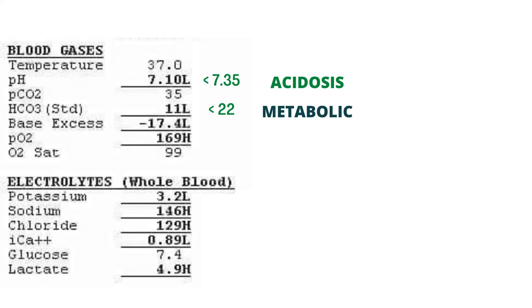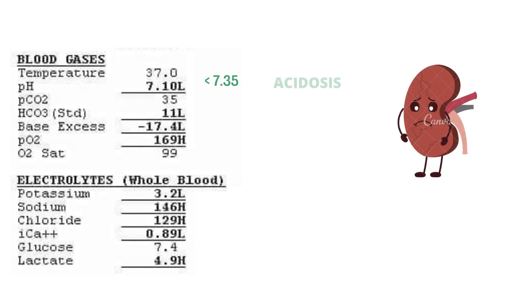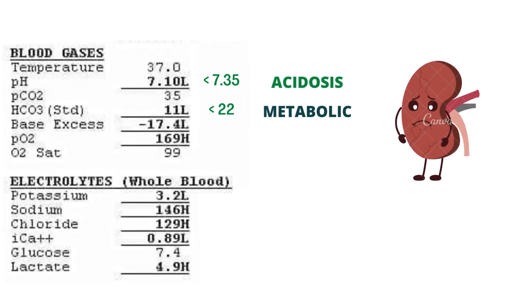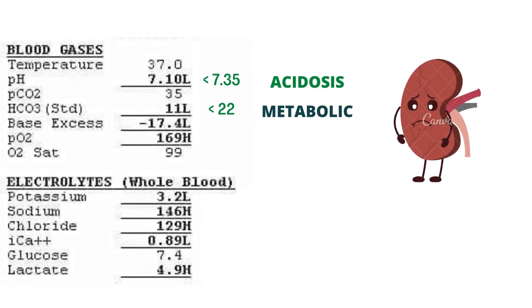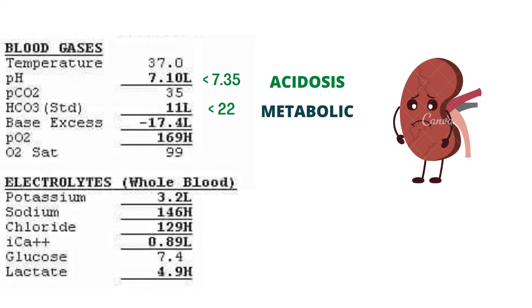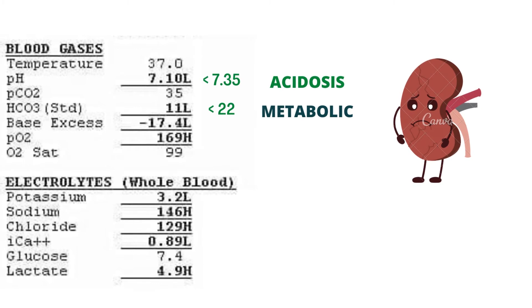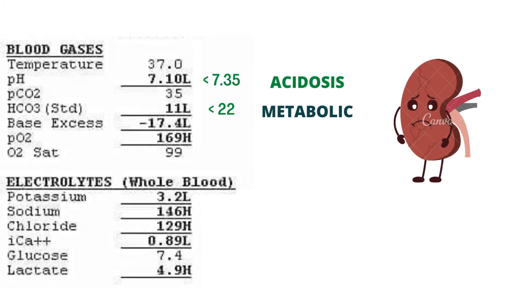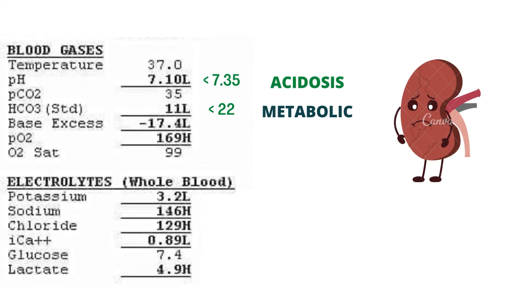Here the pH of blood drops below normal, which is 7.35. Patients with low levels of bicarbonate in ABG suffer from metabolic acidosis due to constant loss of HCO3 from the body, resulting in reduced pH.